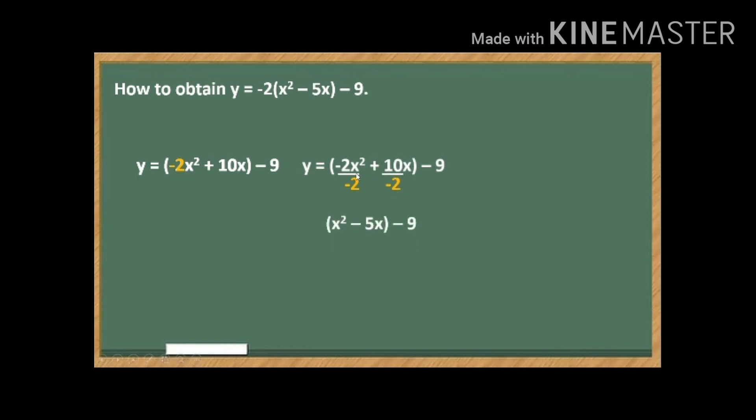So what will happen is negative 2x squared divided by negative 2 is positive x squared. Then let us take plus here as the sign of 10. So positive 10x divided by negative 2, the result is negative 5 and we will make that as minus 5x. Then minus 9, copy, minus 9 and the negative 2 here becomes our factor.